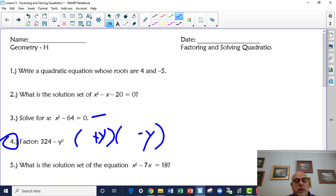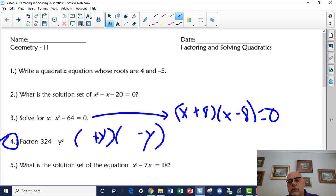Number 3, if you look at this, x squared minus 64 equals 0. It is x plus 8, x minus 8. You get x plus 8 equals 0, x minus 8 equals 0. So x equals negative 8, x equals 8.